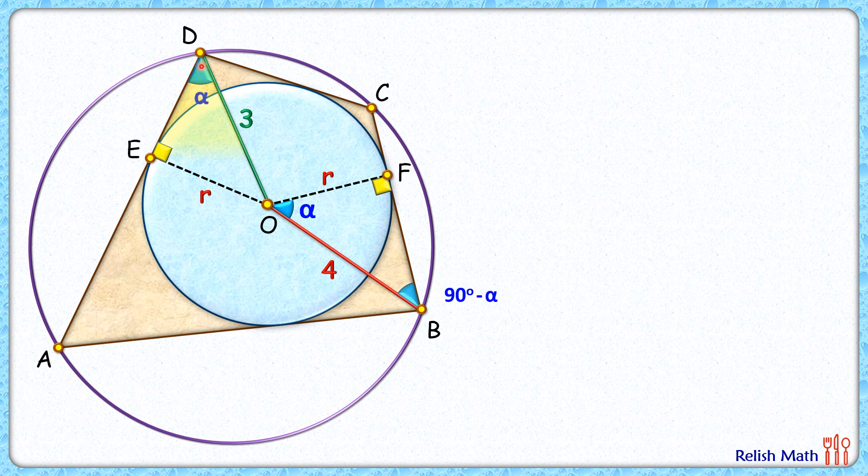Now if you look carefully in this yellow triangle and this pink triangle, we have got angle 90 and α in both of them. So by angle-angle similarity, this yellow triangle is similar to this pink triangle.